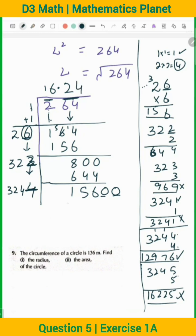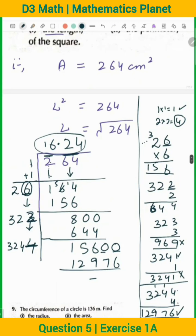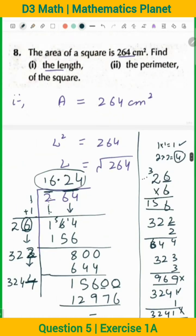4 here and 4 here. So what will we get? 12,976. So now our remainder is whatever. It's okay because we have two decimal places, and I think it will be enough. So what will be the square root? Area is given 264. So L is equal to square root of 264. So L is equal to 16.4.